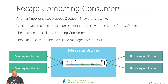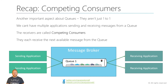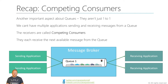Another concept we covered was the idea of competing consumers. This is when we've got basically one queue — different people might be sending to that queue — but the messages are lining up in there, and then more than one receiving application connects to the queue to get messages. The message broker distributes the messages out to the different consumers, but it gives each one of them a different message, so they get given out in turn.